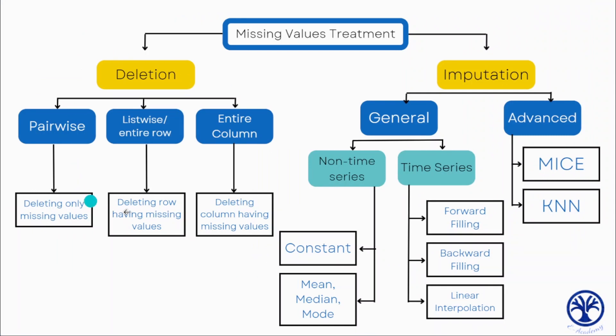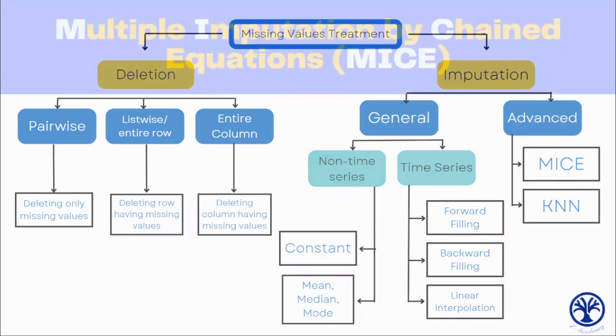We have been talking about the deletion of missing data as well as imputing missing data with time-series and non-time-series data. Now we have to look at some of the advanced techniques that we use to impute missing data. Today we will be looking at the MICE and the KNN approach. Obviously there are many other techniques — if you want us to cover other techniques, write down in the comment section which particular technique you want us to discuss.